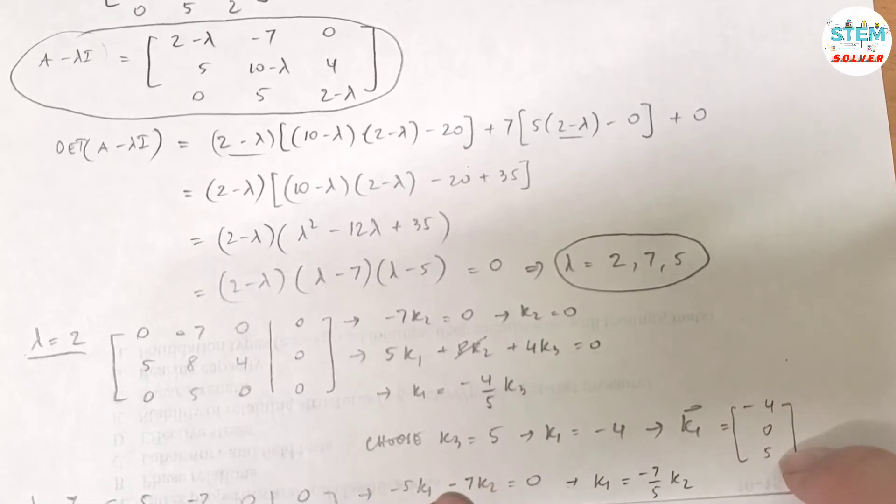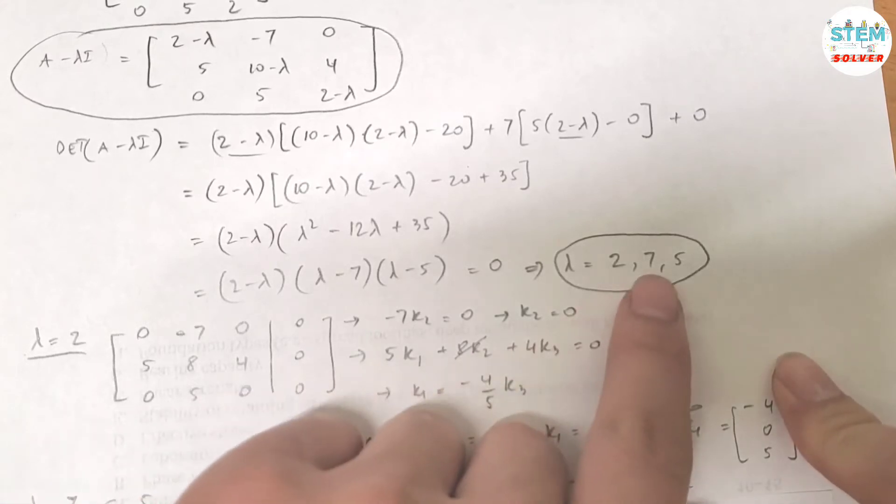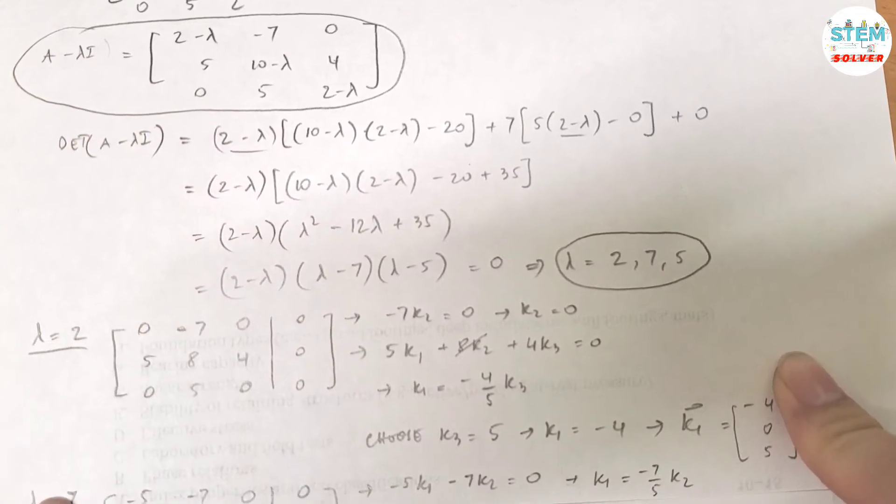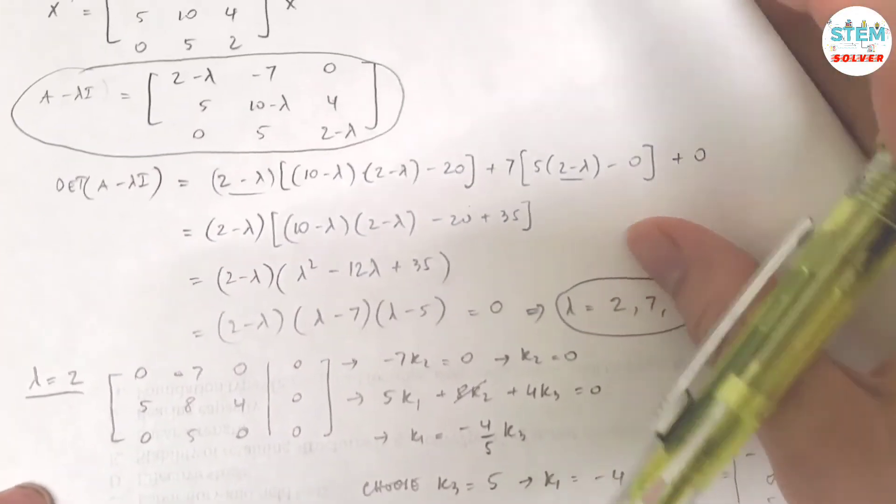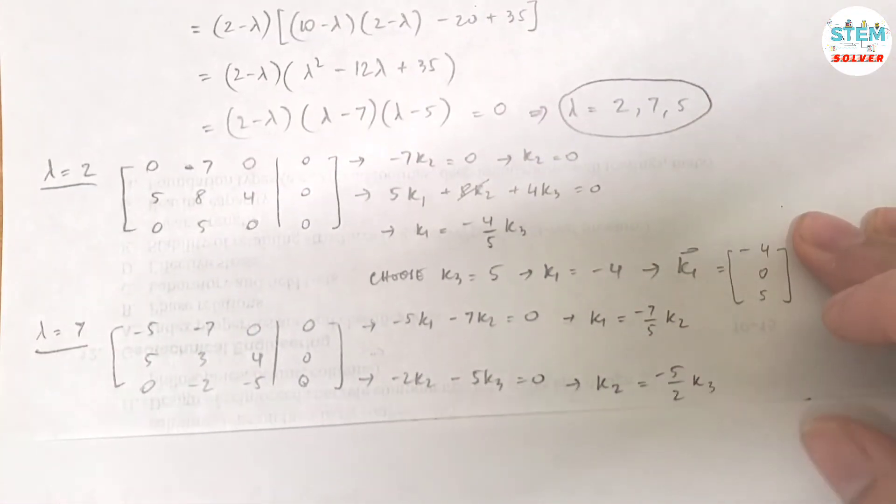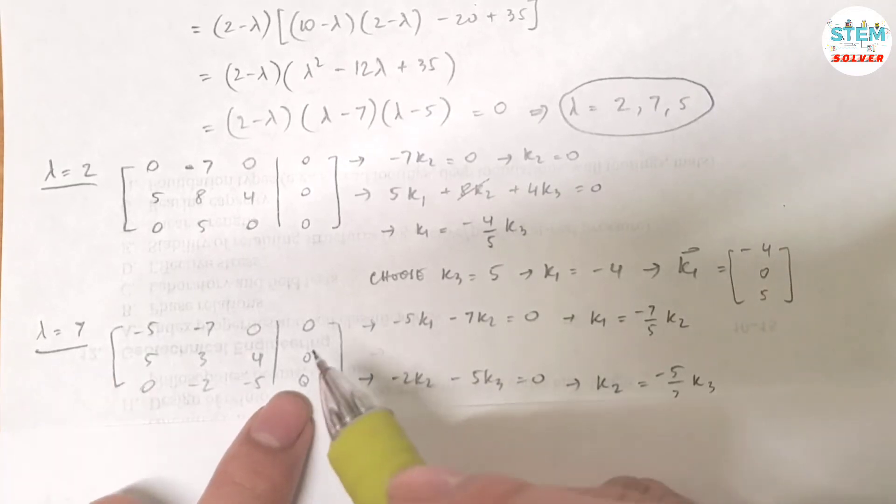Now you're going to repeat this for lambda equals 7. Plug it into here, you will get a new matrix which is this one. Okay, augmented with 0 again.